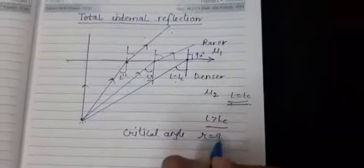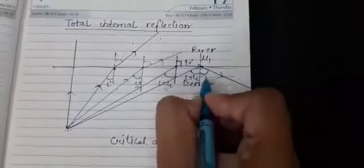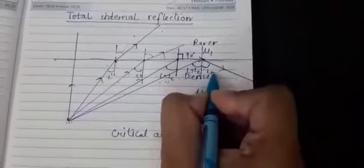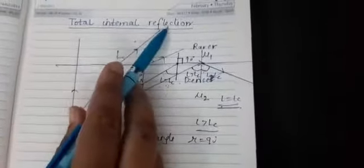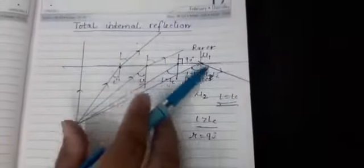When the angle of refraction becomes 90 degrees, and if the ray of light is incident at an angle slightly greater than this critical angle, then it will reflect back into the same medium without any refracted ray passing through. It will be totally reflected back following the law of reflection. This is basically the concept of total internal reflection — no trace of the ray goes into the second medium; it is totally reflected back.